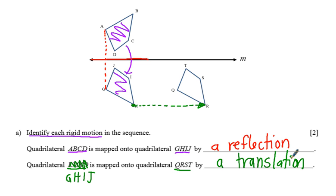Okay, so we have a reflection followed by a translation. And that's how we map this figure onto this one. And that completes the first component.